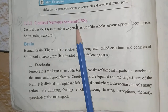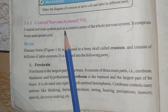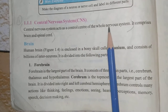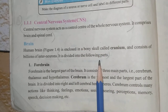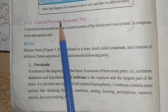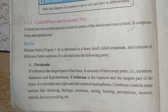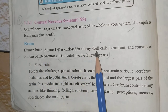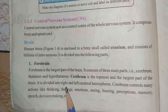Page number four — Central Nervous System, CNS. The central nervous system acts as the control center of the whole nervous system. It comprises the brain and spinal cord. The human brain is enclosed in a bony skull called the cranium and consists of billions of interneurons. It is divided into the following parts.